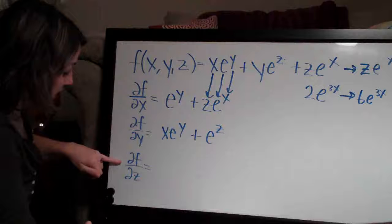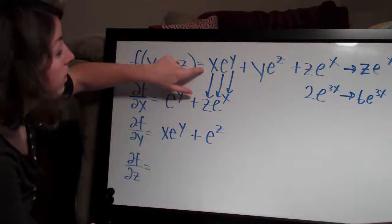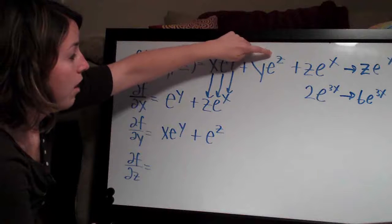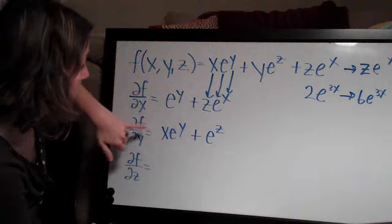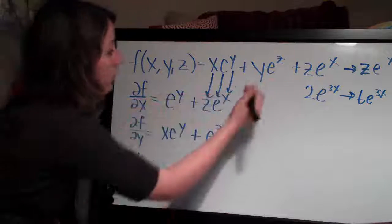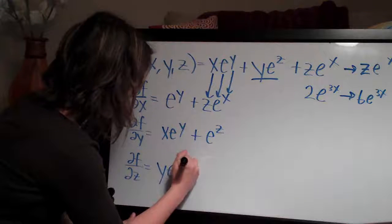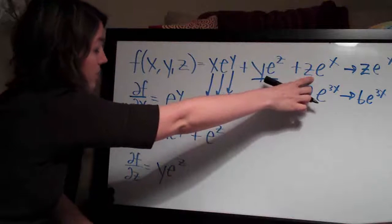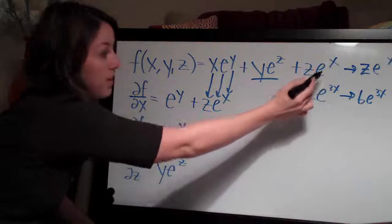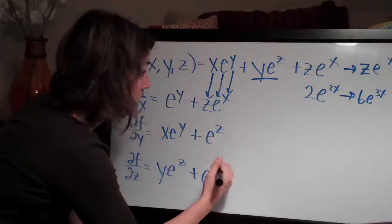For the partial derivative with respect to z, going term by term: the first term x e to the y has no z in it, so it becomes zero and goes away completely. The second term y e to the z — now z is the exponent on e, just like x was on e in the first partial and y was on e in the second partial. So this whole term comes down and stays exactly the same: y e to the z.